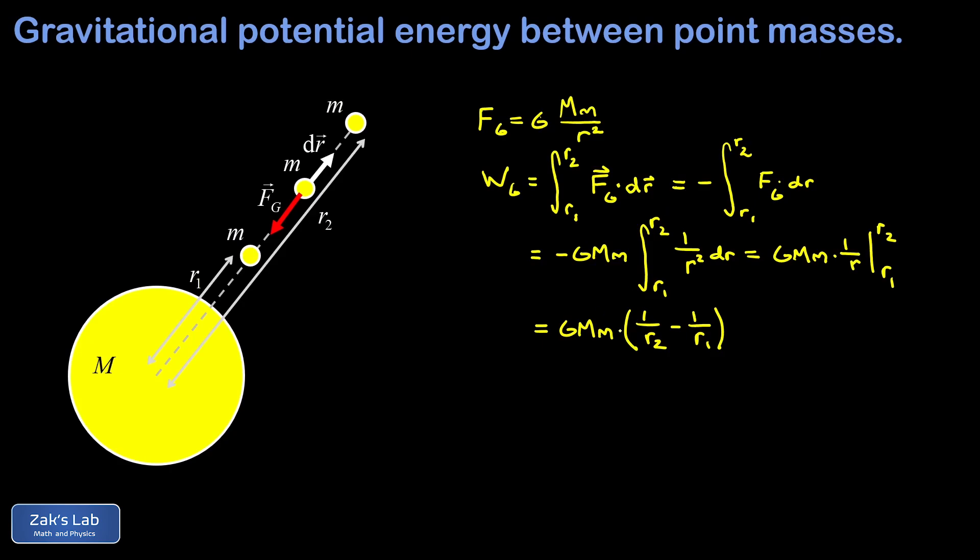I want to point out here, we know the work done by gravity must be a negative number because it's always pointing opposite to the direction of motion. When I look at the difference in parentheses, R2 is bigger than R1, which means 1 over R2 is a smaller number than 1 over R1, and that guarantees that we're looking at a negative quantity. So everything is working the way it's supposed to.